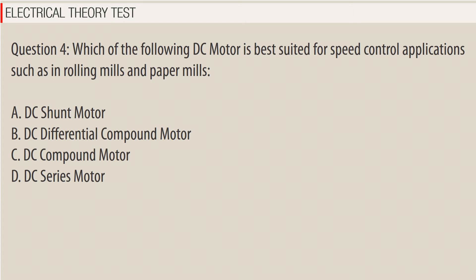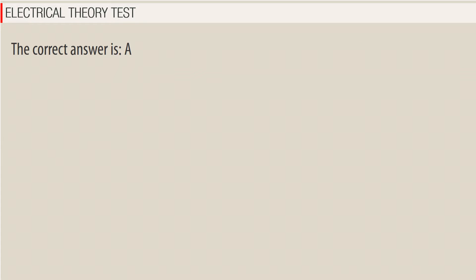Question 4: Which of the following DC motor is best suited for speed control applications such as in rolling mills and paper mills? A. DC shunt motor, B. DC differential compound motor, C. DC compound motor, D. DC series motor. The correct answer is A.